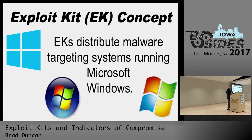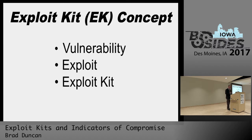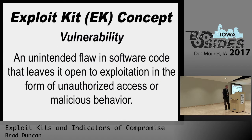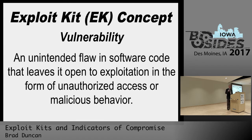When talking about exploit kits, you must understand that exploit kits distribute malware targeting systems running Microsoft Windows. That's not to say other platforms don't get targeted by malware; they just don't in this particular fashion. To fully understand what an exploit kit is, you must first define a vulnerability and an exploit. A vulnerability is an unintended flaw in software code that leaves it open to exploitation in the form of unauthorized access or malicious behavior — a flaw that somebody can take advantage of and do stuff they shouldn't be able to do.